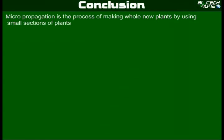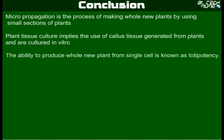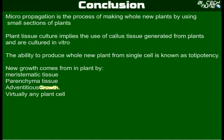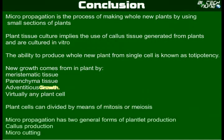Here is the conclusion of today's lesson. Micropropagation is the process of making whole new plants by using small sections of plants. Plant tissue culture implies the use of callus tissue generated from plants and cultured in vitro. The ability to produce a whole new plant from a single cell is known as totipotency. New growth comes from plants by meristematic tissues, parenchyma tissues, adventitious growth, and by virtually any plant cell. Plant cells can be divided by means of mitosis or meiosis. Micropropagation has two general forms of plantlet production: callus production and micro-cutting.